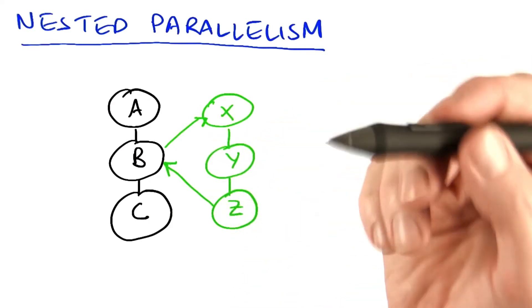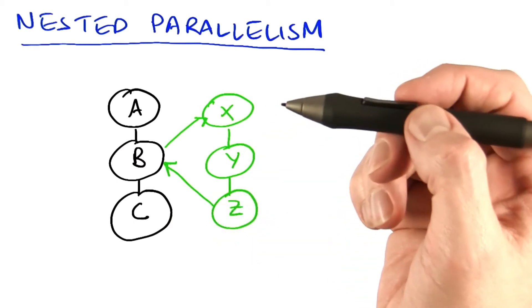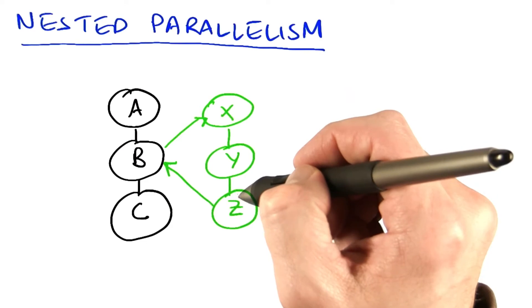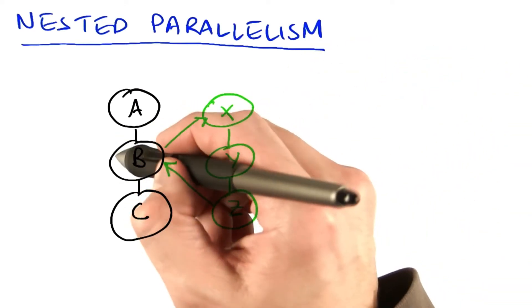I can just launch that work in line from b exactly where I need it. Without nested parallelism, I might have to work x, y, and z into b's code and make a huge program, or do some gymnastics with the CPU to launch the work,